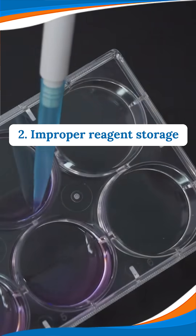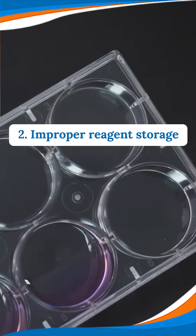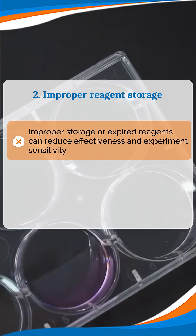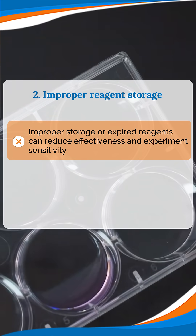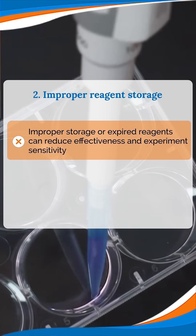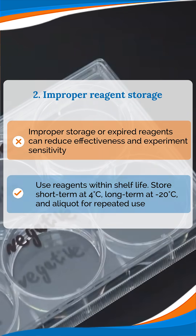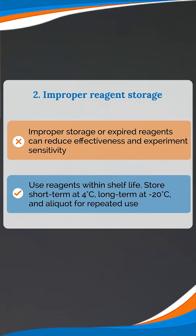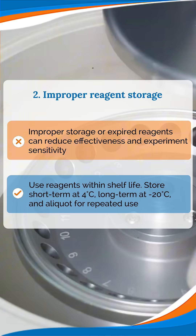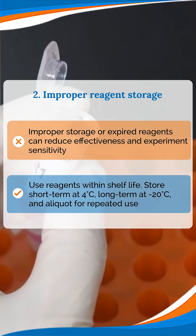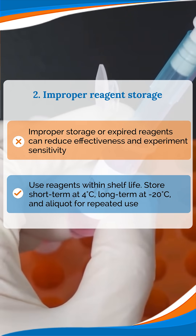Issue 2: Improper Reagent Storage. If stored improperly or past its expiration date, reagents might lose their effectiveness, reducing the sensitivity of the experiment. Tip: Use reagent kits within their shelf life. Store short-term at 4 degrees Celsius and long-term at minus 20 degrees Celsius. For repeated use, consider aliquoting them.